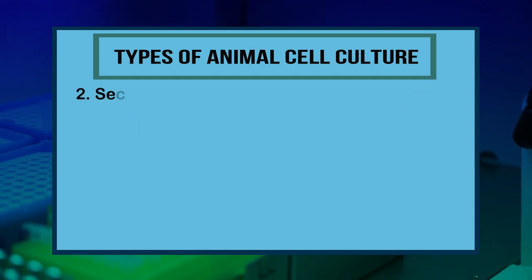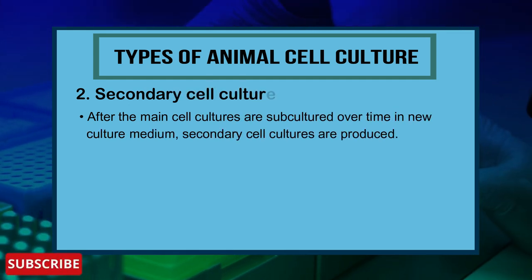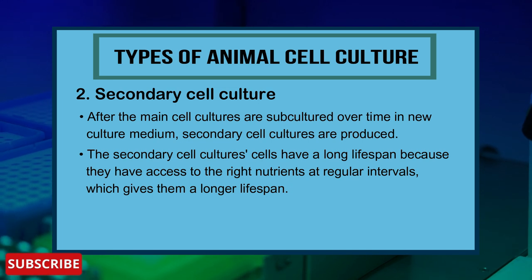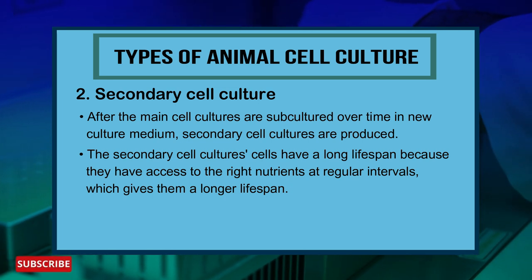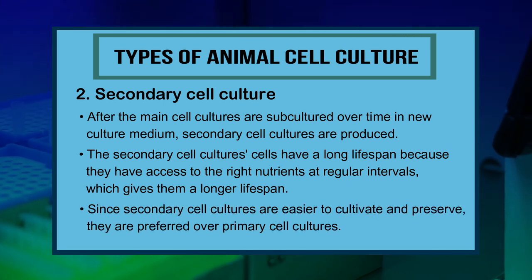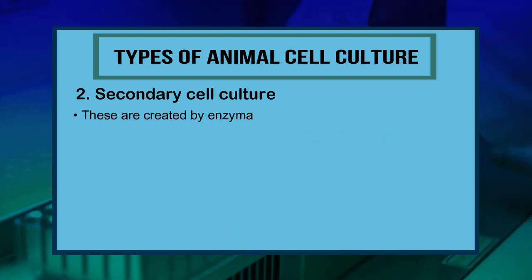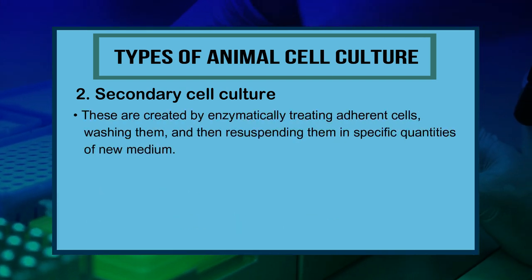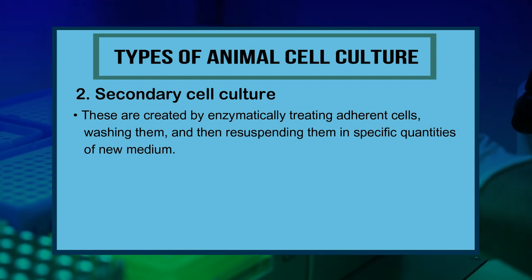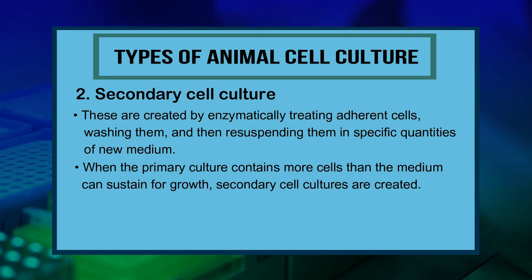After the primary cell cultures are subcultured over time in new culture medium, secondary cell cultures are produced. Secondary cell culture cells have a long lifespan because they have access to the right nutrients at regular intervals. Since secondary cell cultures are easier to cultivate and preserve, they are preferred over primary cell cultures. They are created by enzymatically treating adherent cells, washing them, and resuspending them in specific quantities of new medium. Secondary cell cultures are created when the primary cells contain more cells than the medium can sustain.